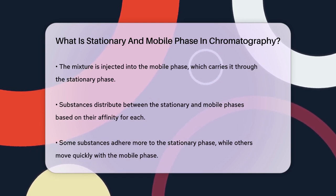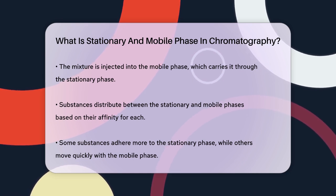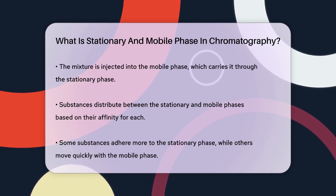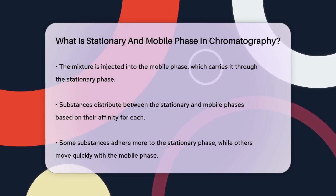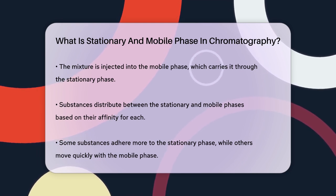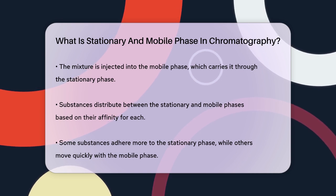This difference in affinity allows the substances to separate as they travel through the system. For instance, in gas-liquid chromatography, the mobile phase is a gas, and the stationary phase is a liquid film on a solid support. The gas flows through the column, and the substances separate based on their partial pressures above the stationary phase.